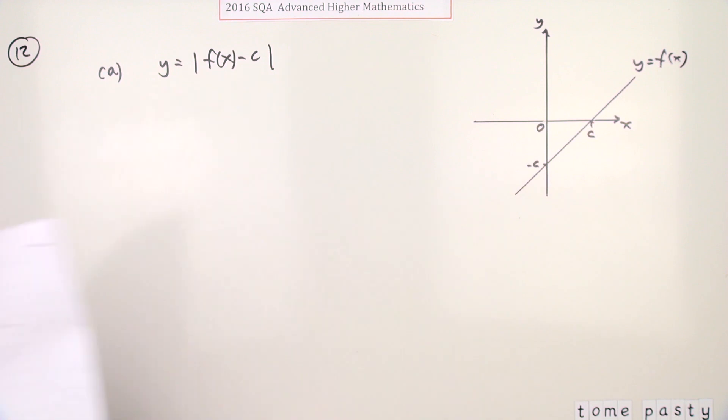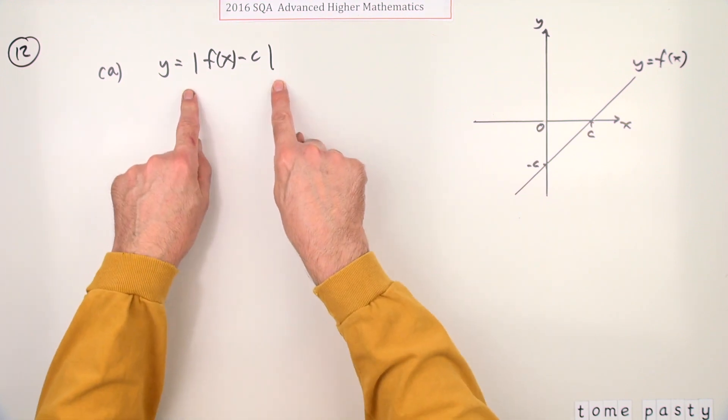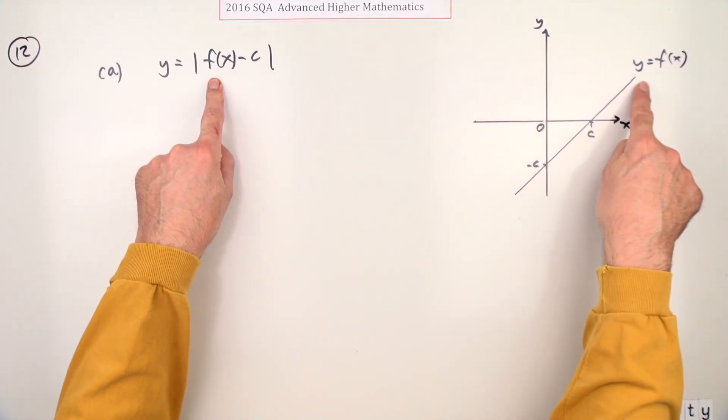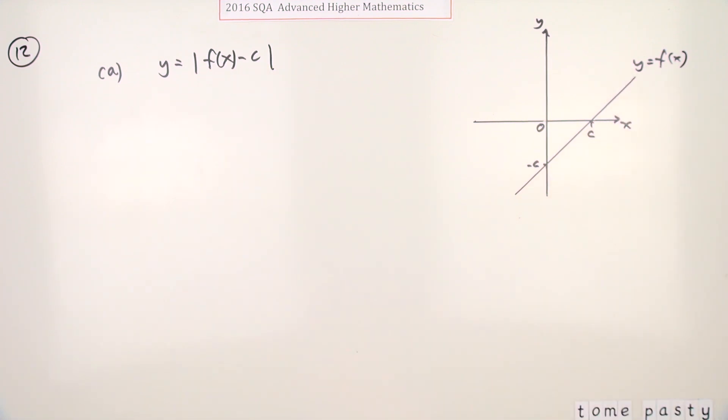So part A for two marks. What would this be? Well that just says you take this graph and you shift all the answers down c. So that means instead of crossing through negative c, it'll now cross through negative 2c.